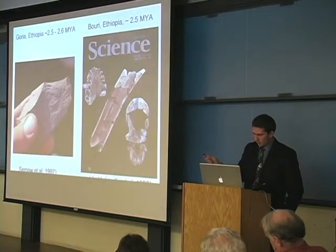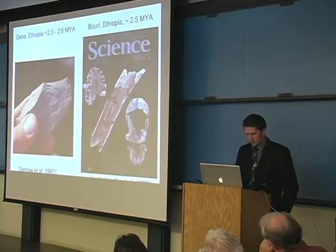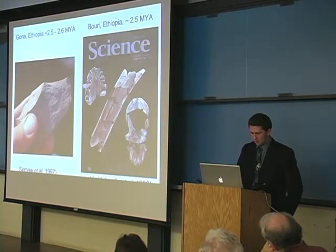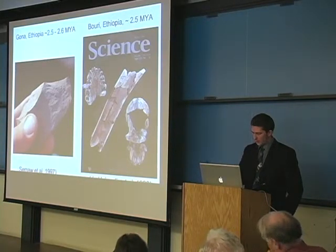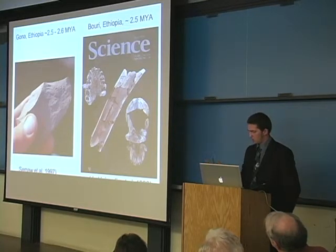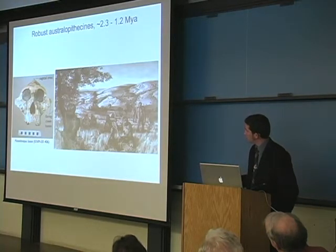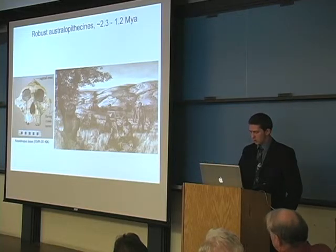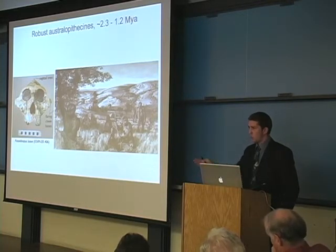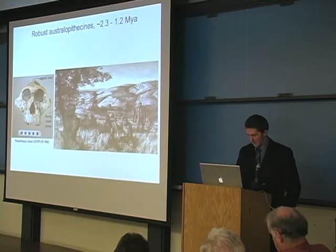I also describe in these slides that a probable descendant of afarensis, Australopithecus garhi, developed longer legs, stone tool making, and a large brain at about 2.5 million years ago, and how this is probably related to subsistence pressure — because at the same time we see the evolution of the robust Australopithecines who are adapted to eating hard, rough food items. So here we see adaptation to subsistence pressure, but two and a half million years after the origins of bipedality.